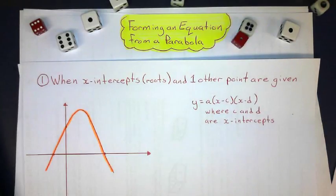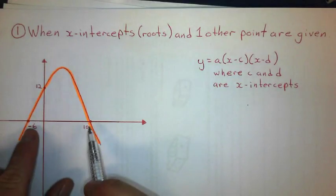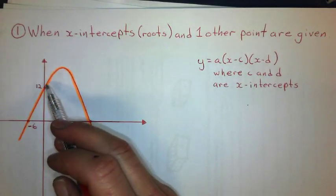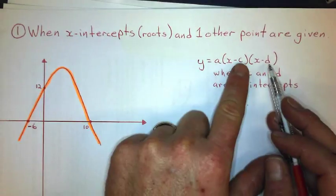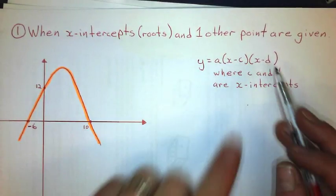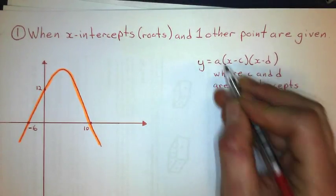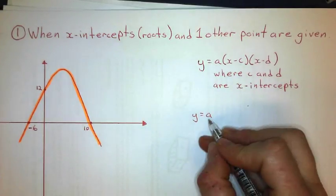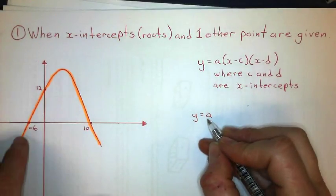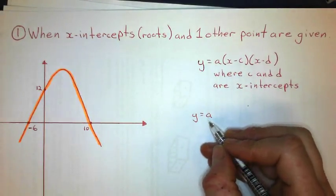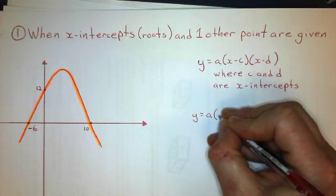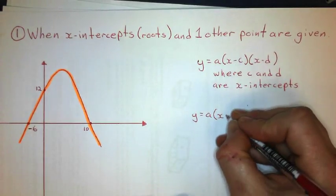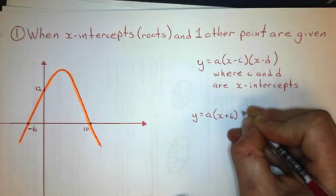So let's plug the values in. I've got my x-intercepts of negative 6 and 10, and my y-intercept of 12, which I'll use in a bit. So first I substitute the values into my general formula. I'm going to solve for a — I don't know what that is yet. That's going to be the scale factor of the parabola; it describes the shape of it.